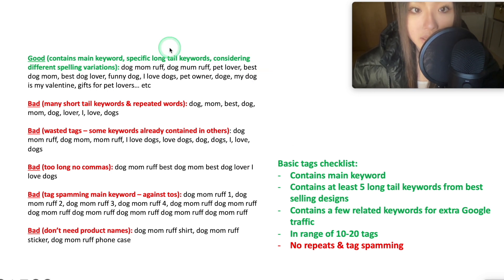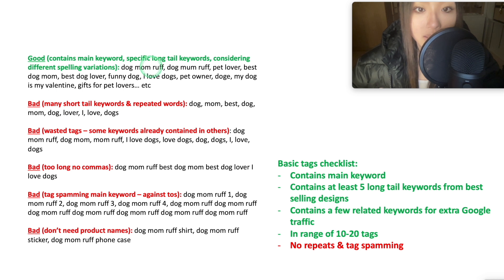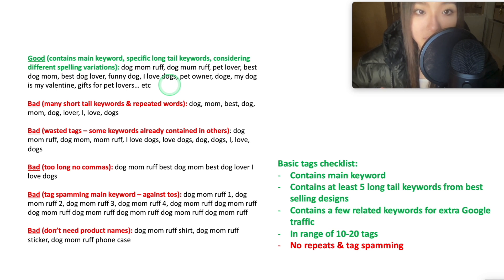First, we have the main keyword we're trying to rank for. It should be low competition, high demand, ideally trending, and not trademarked. This is the keyword you've researched that's most likely to get you sales and traffic. The other keywords are just for additional traffic. Getting this main keyword and niche right is the most important factor for sales — you can have the best SEO techniques, but if you pick a bad niche, you won't make sales.